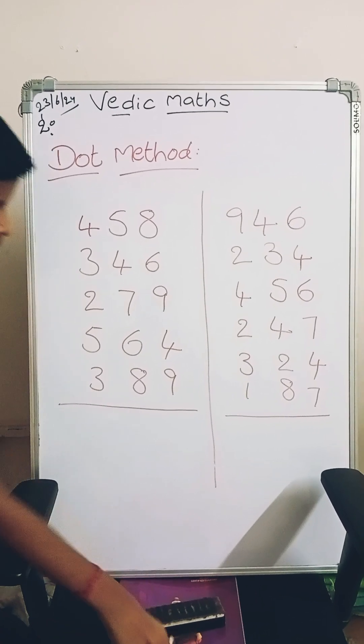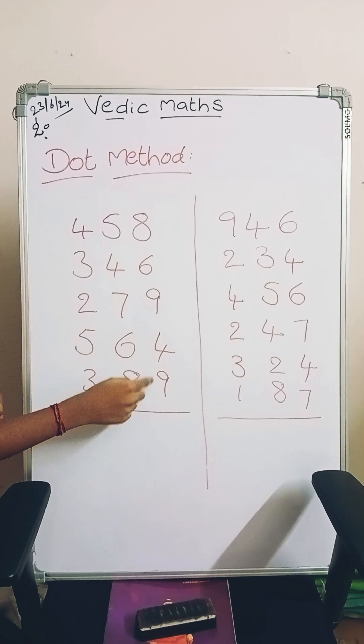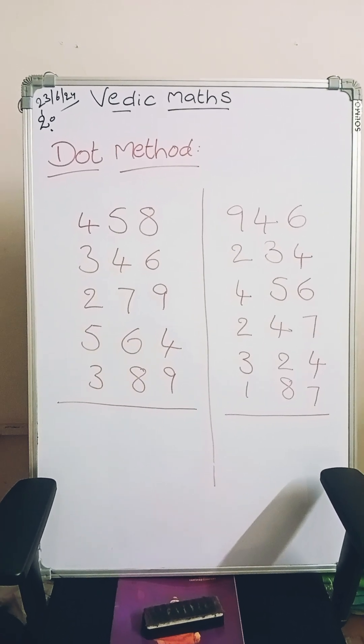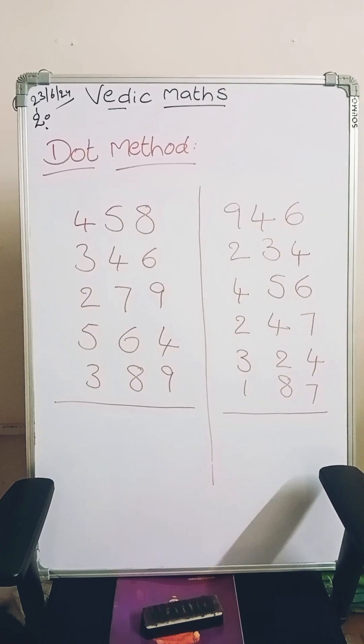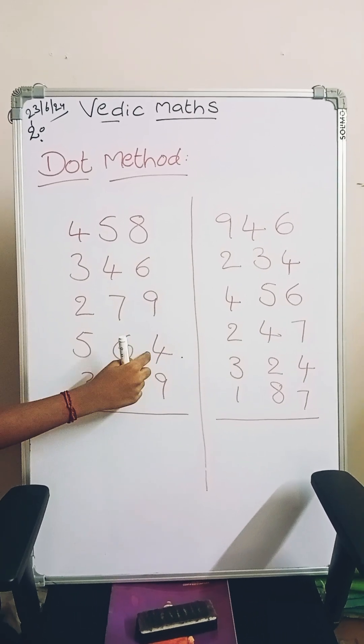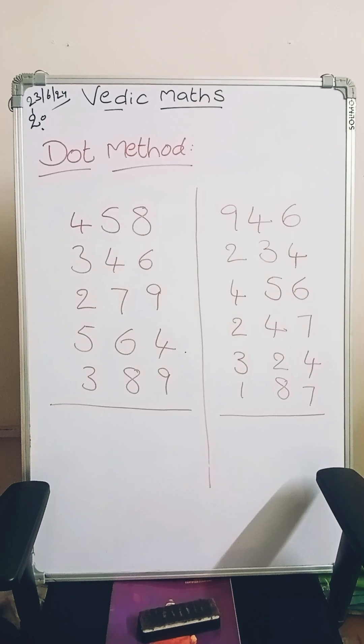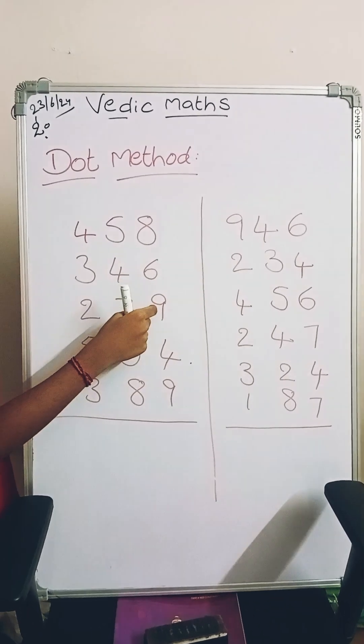So let's go with the problem. First add 9 plus 4. 9 plus 4 is 13. It has 2 digits. If we get 2 digits, we should put a dot. 9 plus 4 is 13, so the n number is 3. Keep 3 in your mind.